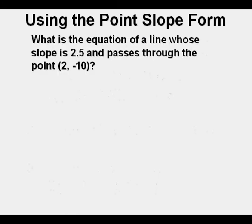This is the first problem we'll look at in this lesson. What is the equation of a line whose slope is 2.5 and passes through the point 2 comma negative 10?